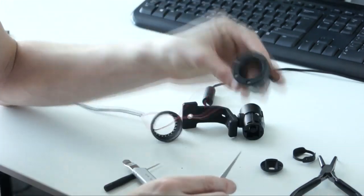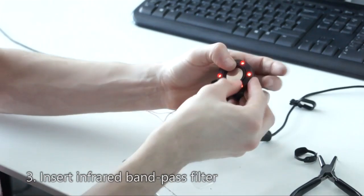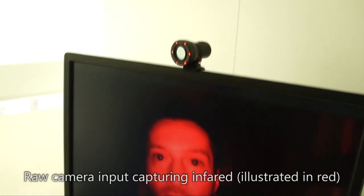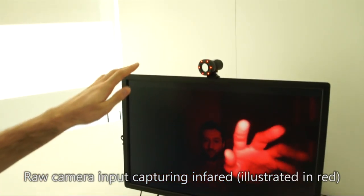Finally, an infrared bandpass filter is attached in order to block most of the ambient illumination. The modified web camera now only captures the infrared illumination, here visualized in red, which we use for our depth estimation algorithm.